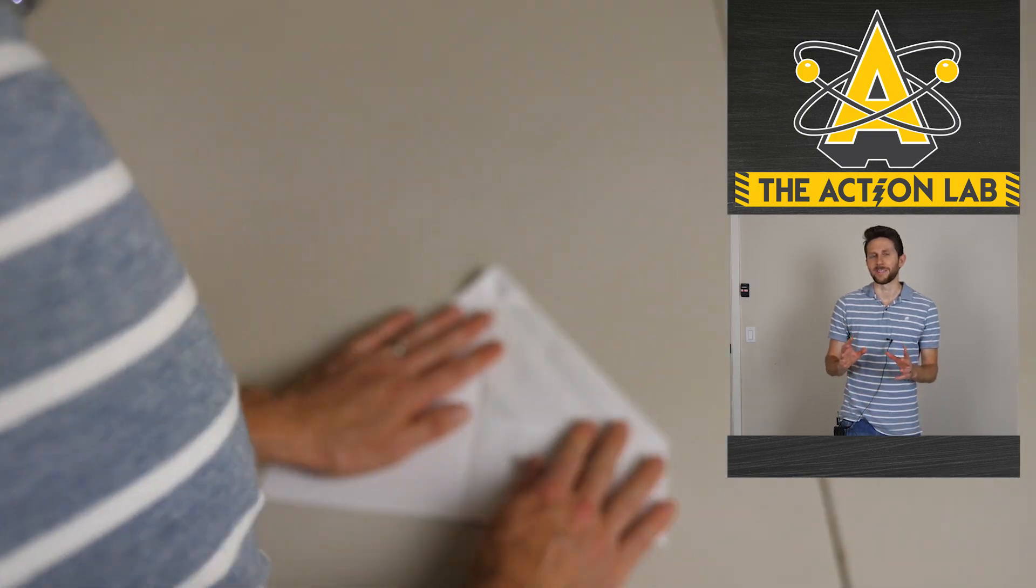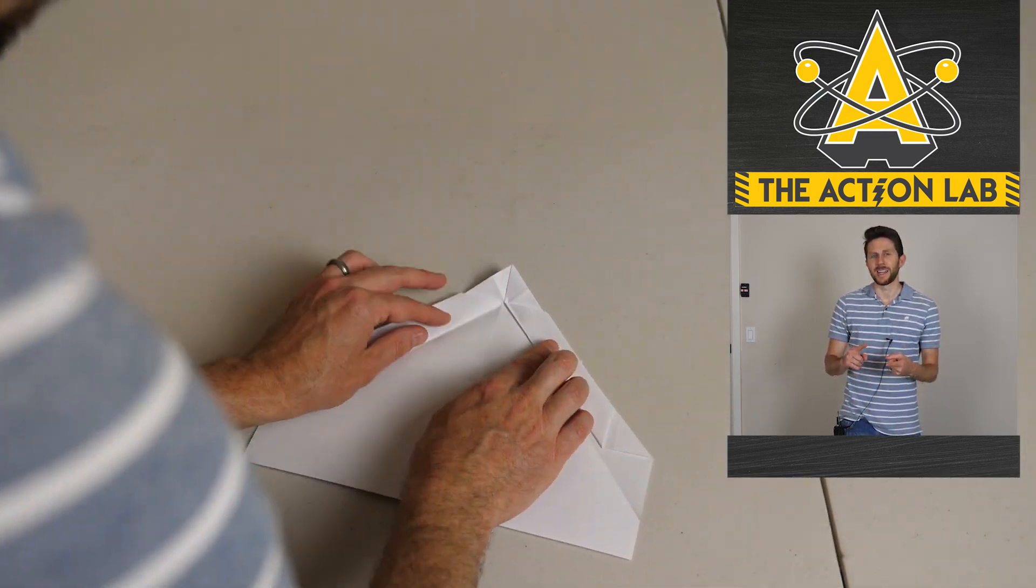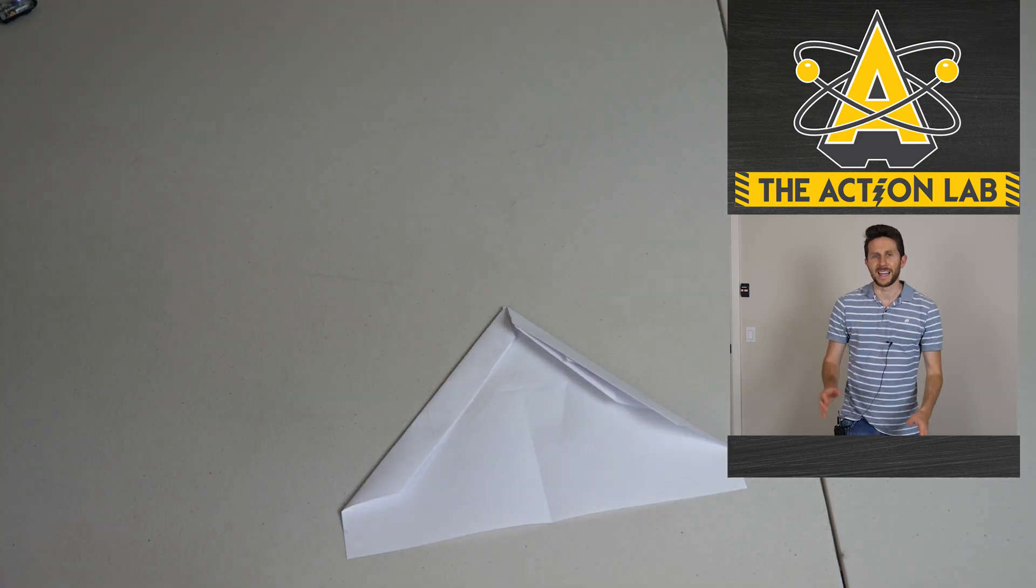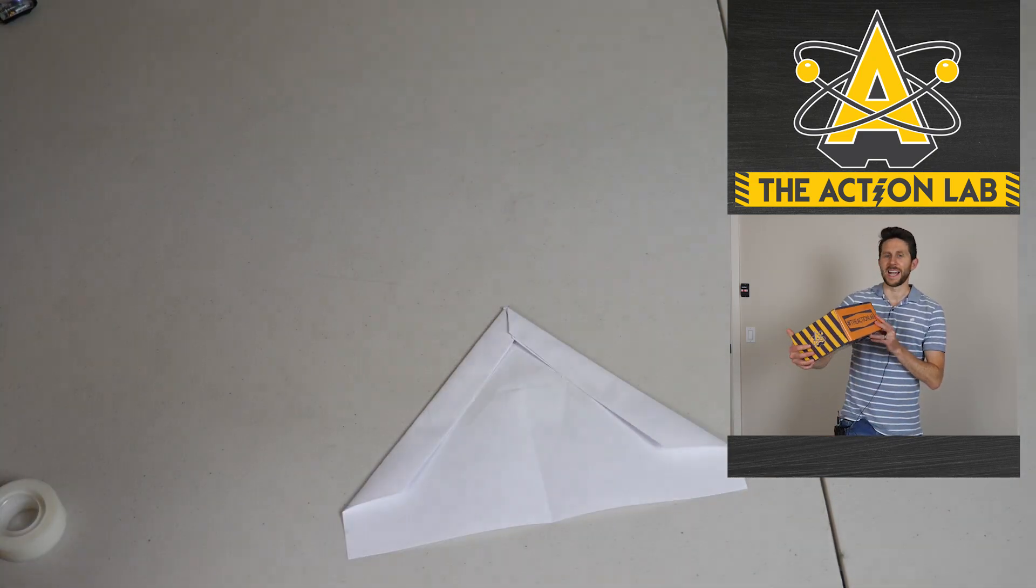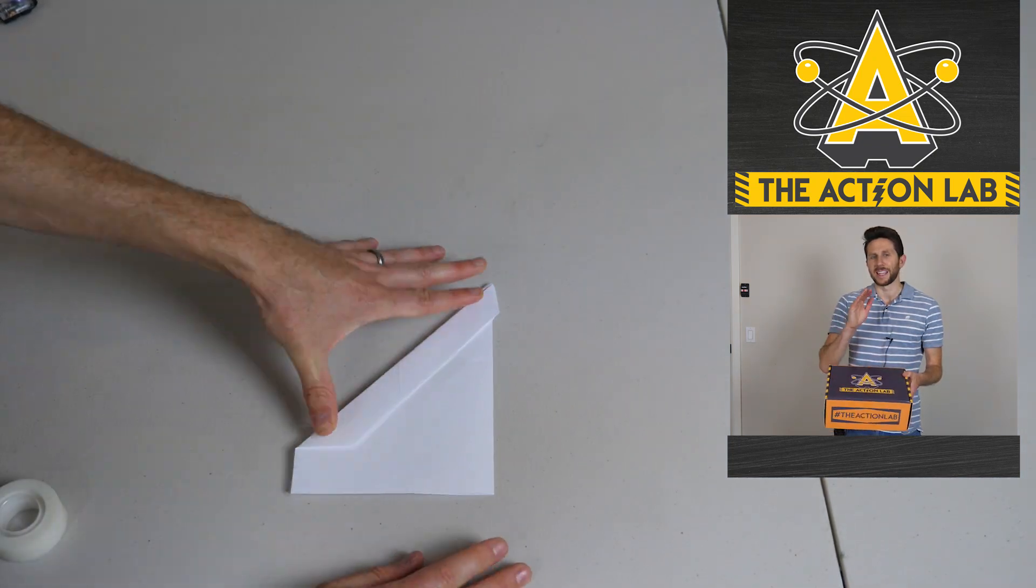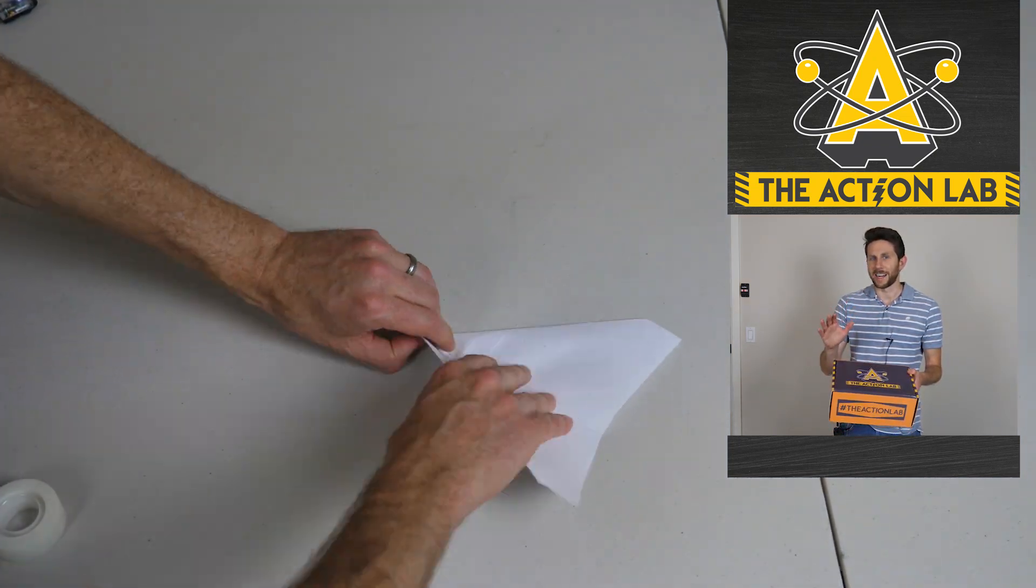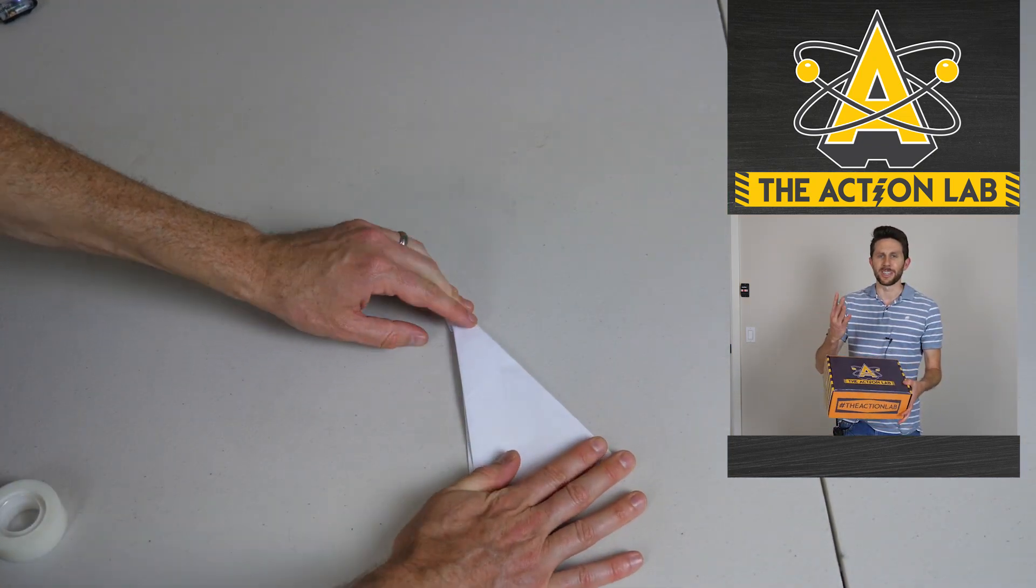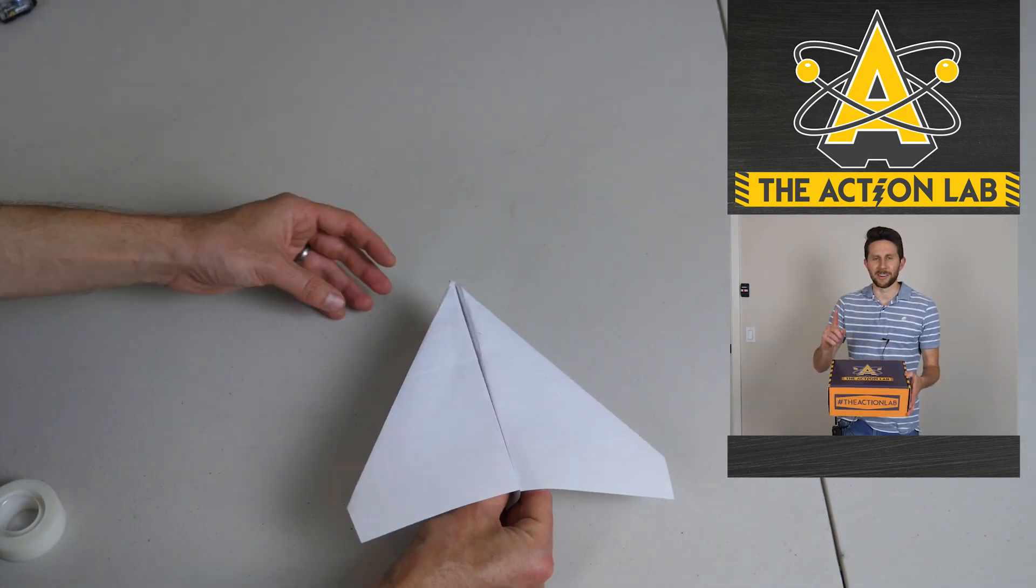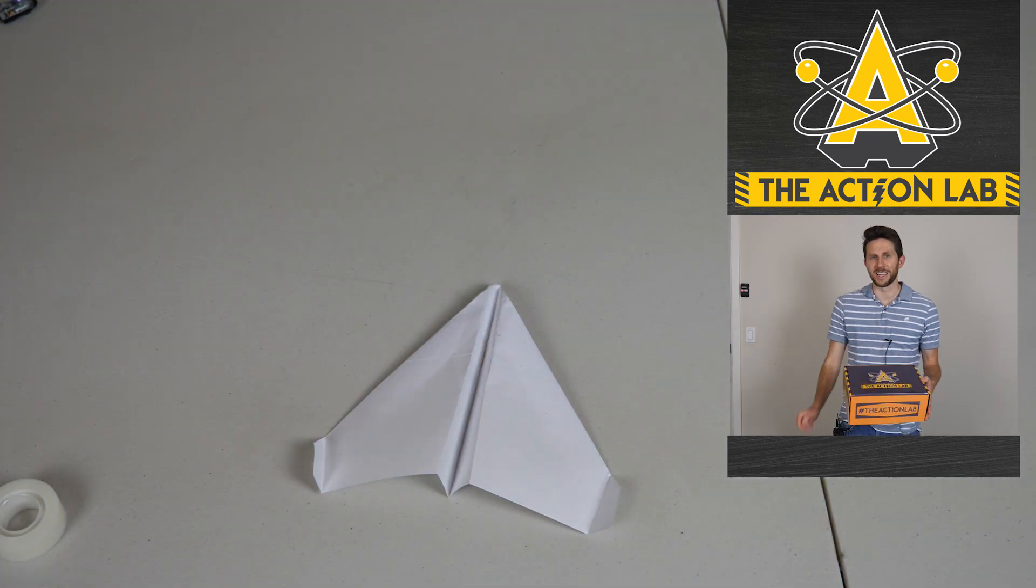So before I take my plane up for its flight, you may know that next week it's the 4th of July in the United States. And to celebrate that, I'm giving a special for my Action Lab subscription box. If you use the link in my description, theactionlab.com/fireworks, you'll be able to get $4 off your subscription. Go get your box if you haven't yet. The first box is going to be your very own vacuum chamber. Now let's go fly the plane.